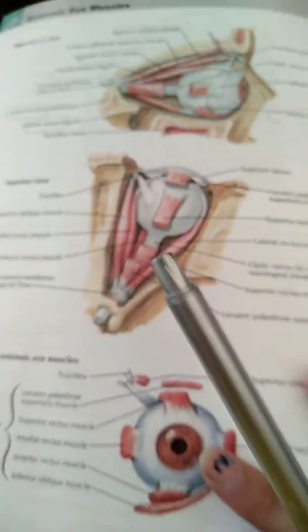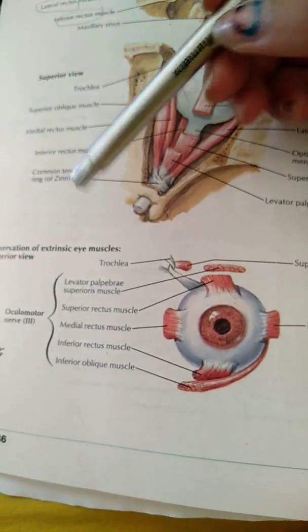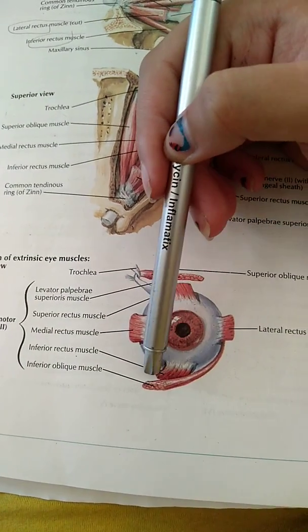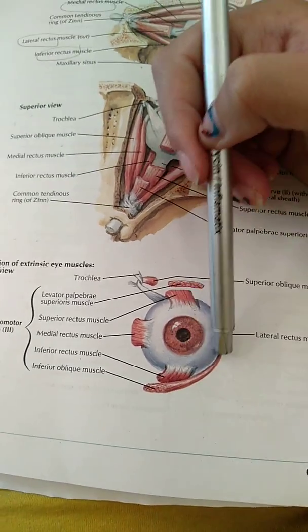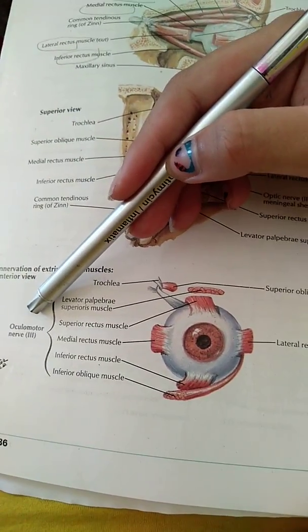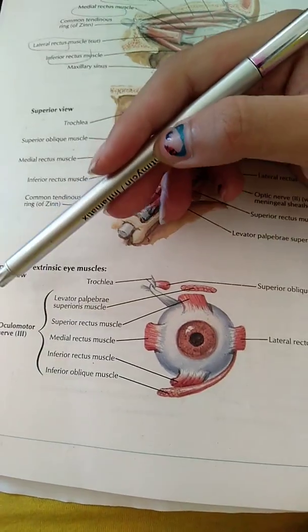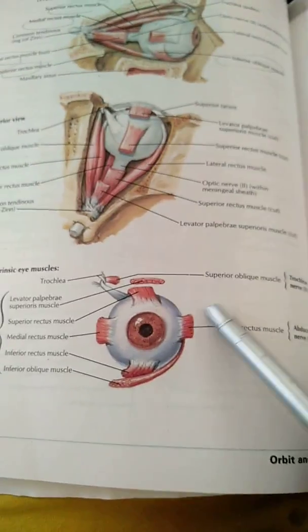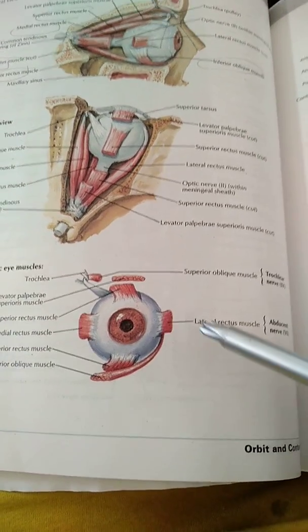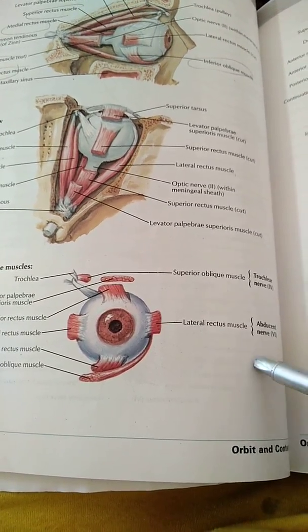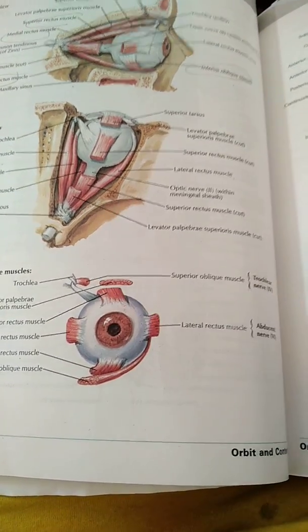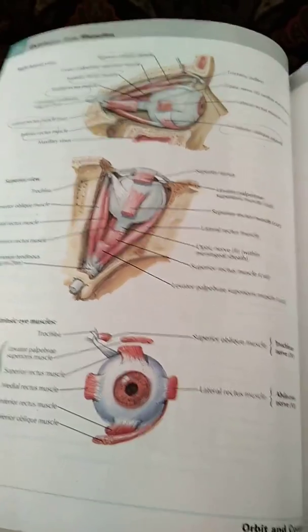Regarding nerve supply: the superior rectus, medial rectus, inferior rectus, and inferior oblique muscles are all supplied by the third cranial nerve, that is the oculomotor nerve. The lateral rectus muscle is supplied by the abducent nerve, that is cranial nerve number six. The superior oblique muscle is supplied by the trochlear nerve.